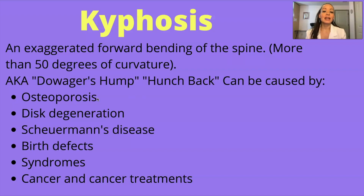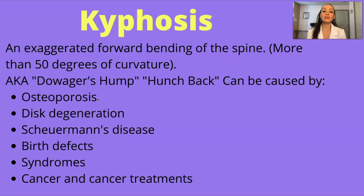Corticosteroids are steroids and they are immunosuppressants. A lot of people who have some kind of autoimmune disorder — like lupus or rheumatoid arthritis — are taking corticosteroids. Sometimes you may see a little old lady at the grocery store who is completely bent over; that is perhaps because she has osteoporosis.